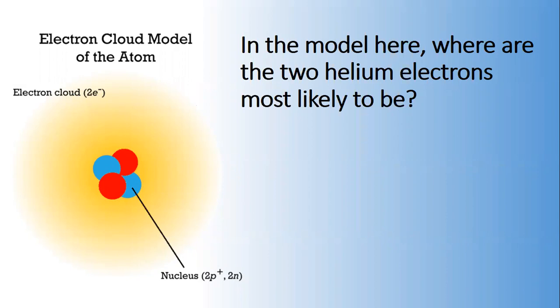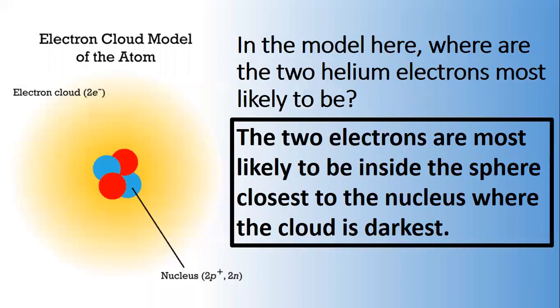So a quick question. In the model here, where are the two helium electrons most likely to be? Well, we just said that. The two electrons are most likely to be inside the sphere closest to the nucleus where the cloud is darkest.